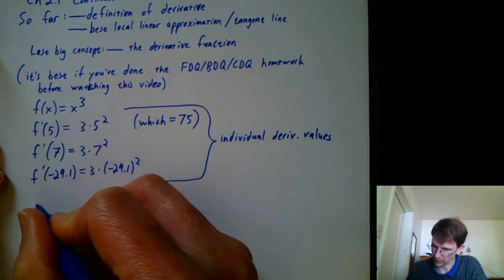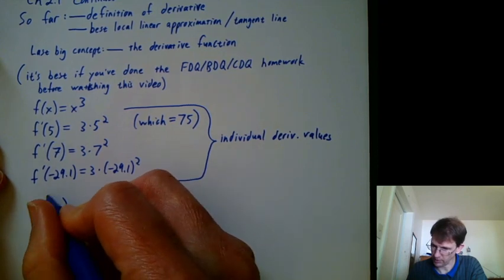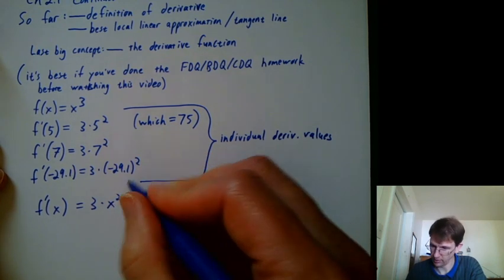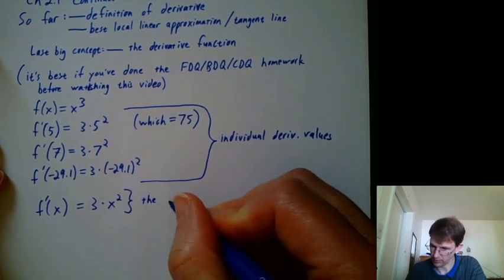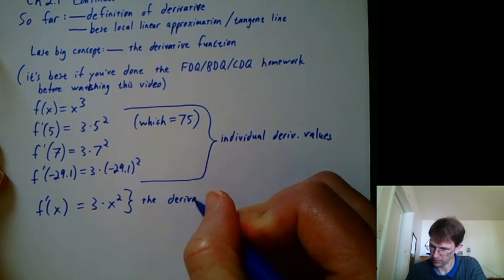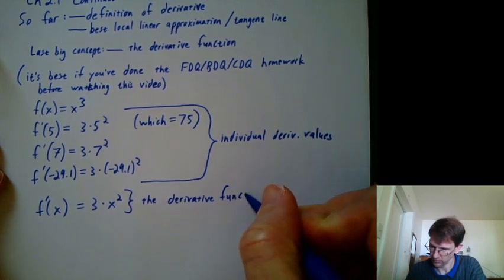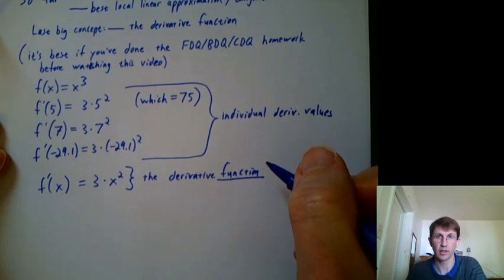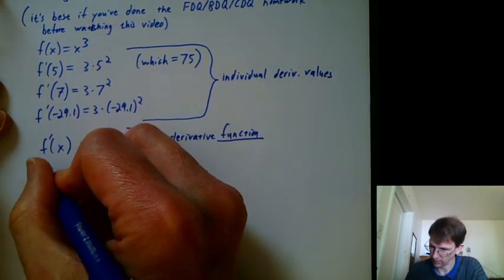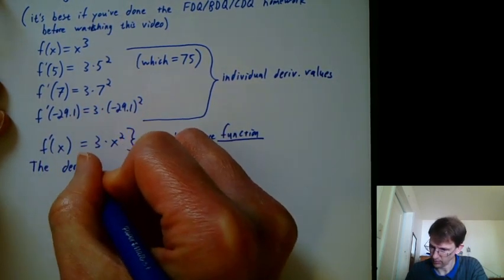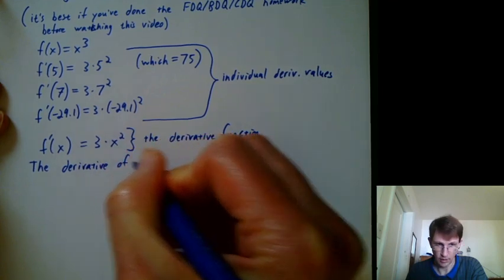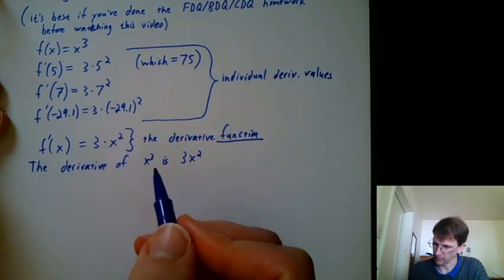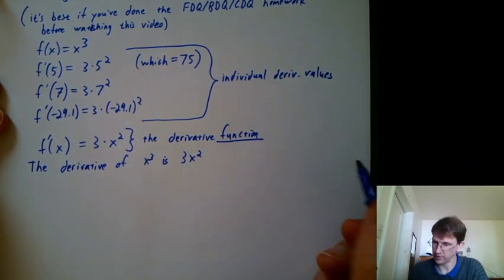But I can generalize it and say, well, whatever you plug in to f prime, you're going to get 3 times x squared. And that is the derivative function. So it's a function derived from the original function x cubed. And we can say the derivative of x cubed is 3x squared. So that's an important calculus thing to be able to say.